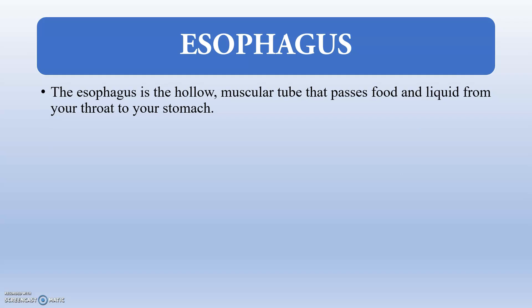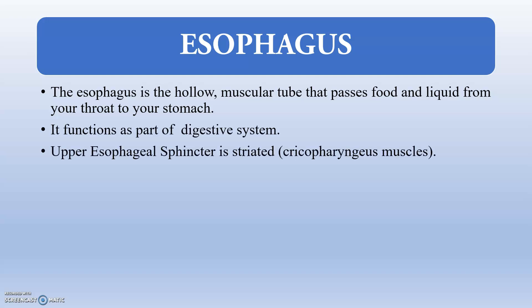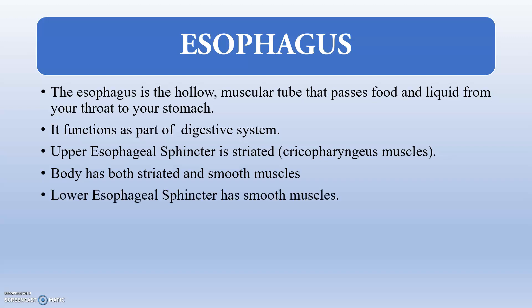The esophagus is the hollow muscular tube that connects the oral cavity to your stomach. It acts as the carrier of food and liquid from the throat to the stomach, functioning as part of the digestive system. We have two esophageal sphincters: the upper esophageal sphincter and the lower esophageal sphincter. In the canine, approximately 90% of the esophagus is composed of striated muscles, whereas the lower esophageal sphincter (LES) is composed of smooth muscle tissue.